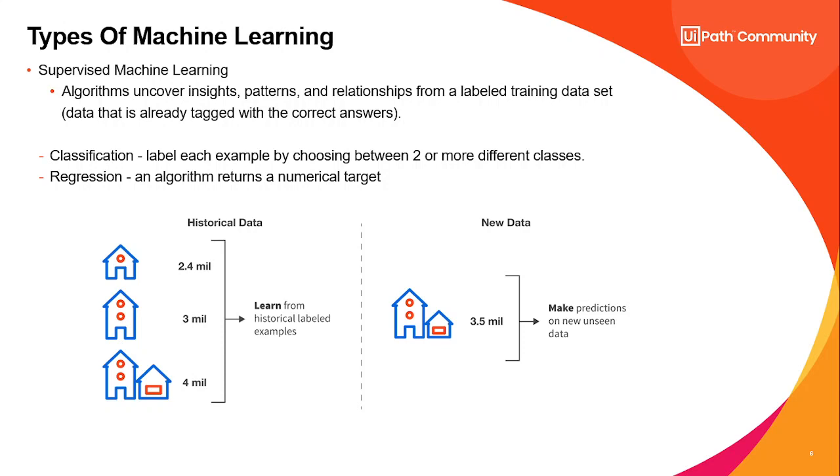For example, will a person default on a loan if they already have a loan? The answer will be yes or no. Classifying emails as spam or not spam, that would be classification. Regression returns a numerical target. For example, the price of a home, as we discussed earlier, would be numerical data. That's what regression means.